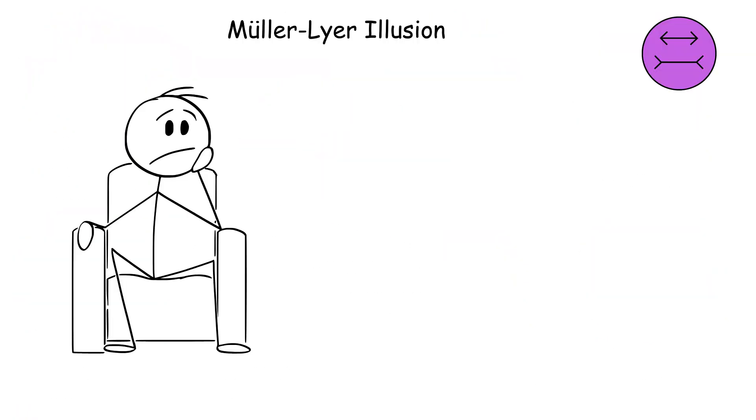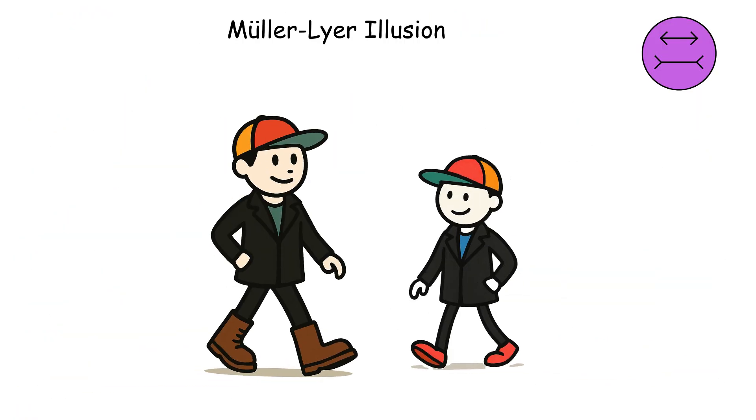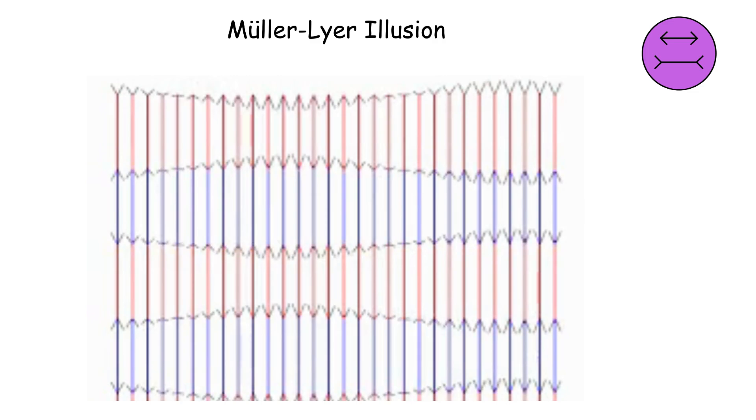The Müller-Lyer Illusion. Imagine you're at a party and two people walk in wearing the exact same outfit, but one person looks way taller just because of their shoes. That's basically the Müller-Lyer Illusion.